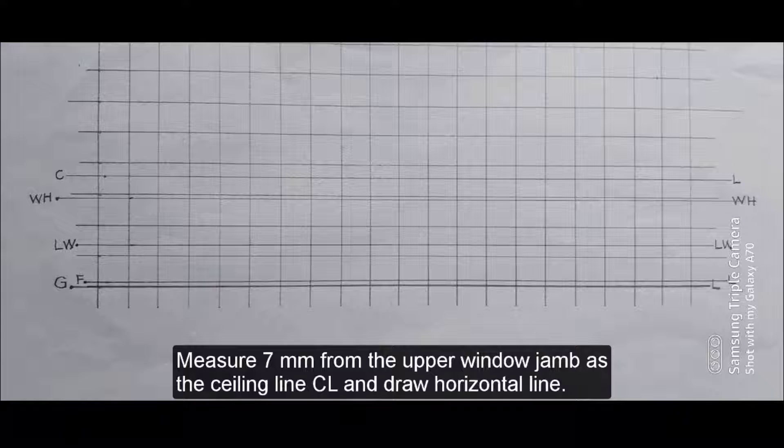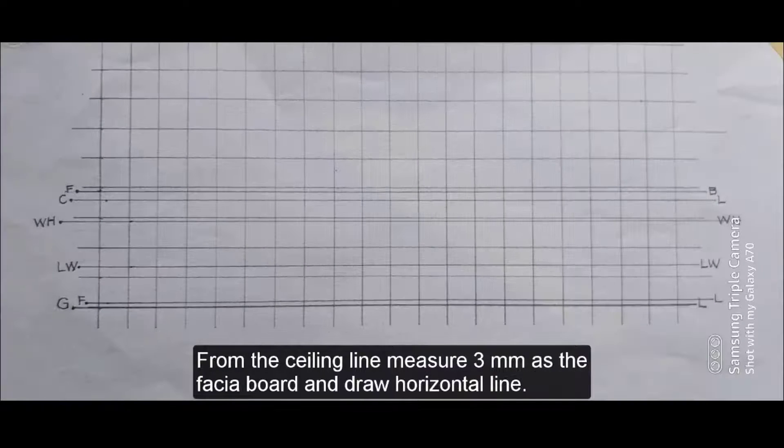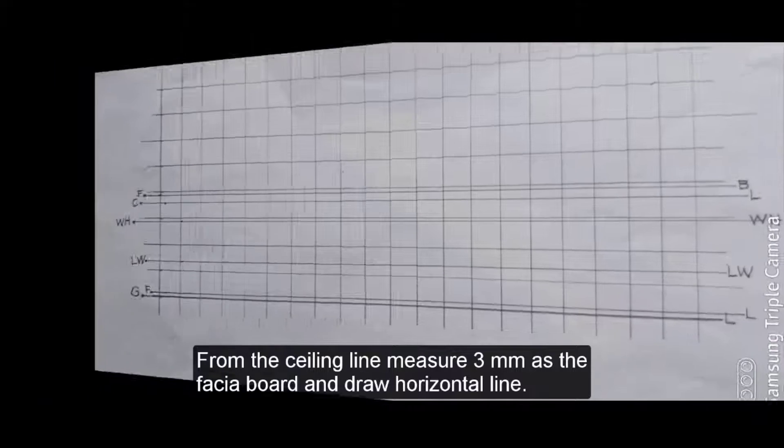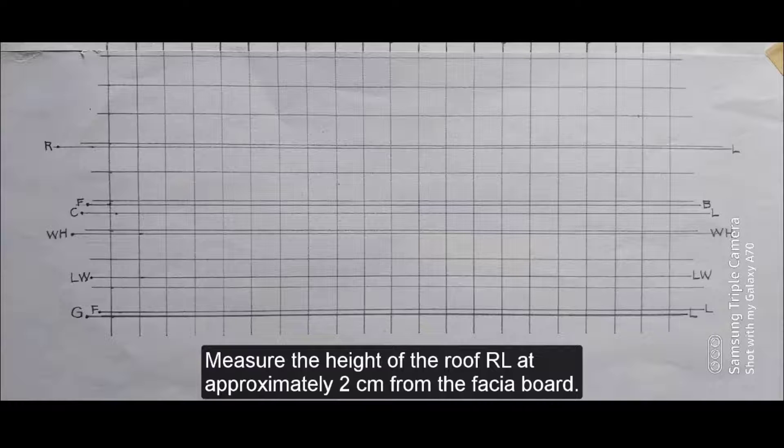Measure 7 mm from the upper window jump as the ceiling line CL and draw a horizontal line. From the ceiling line, measure 3 mm as the face of work and draw a horizontal line. Measure the height of the roof or the roof line at approximately 2 cm from the face of work.